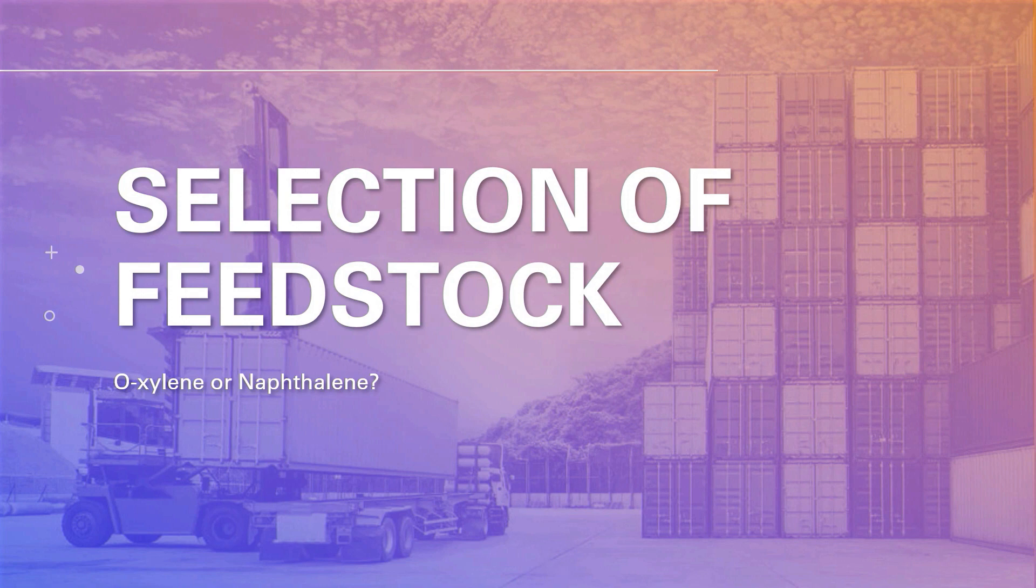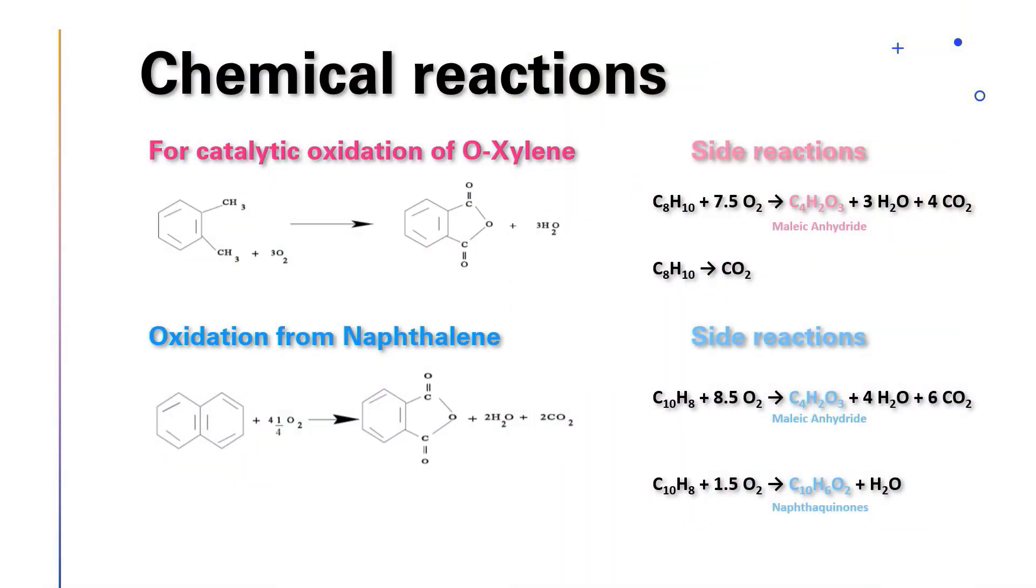Selection of feedstock between o-xylene and naphthalene. Here are the chemical equations for the oxidation of o-xylene and naphthalene. The byproduct from oxidation of o-xylene is maleic anhydride, while for naphthalene, are maleic anhydride and naphthoquinones.